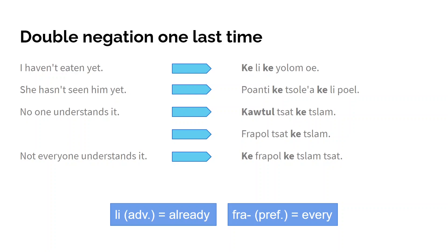'She hasn't seen him yet' follows exactly the same pattern. You can also use 'ke' in front of the prefix 'fra-' meaning 'every,' to mean 'not every.' If I want to say 'no one understands it' I can say 'kawtu zart ke zìsìt,' but I can also say 'frapo zart ke zìsìt' meaning 'everyone does not understand it.' However if I want to say 'not everyone understands it,' I put 'ke' in front of 'frapo': 'ke frapo ke zìsìt zart.' This works with every noun built with the 'fra-' prefix, for example 'ke fra'ioang' meaning 'not every animal.'